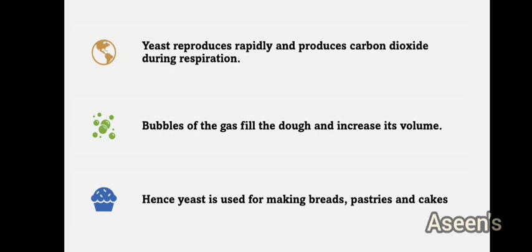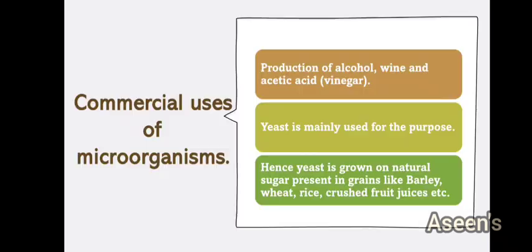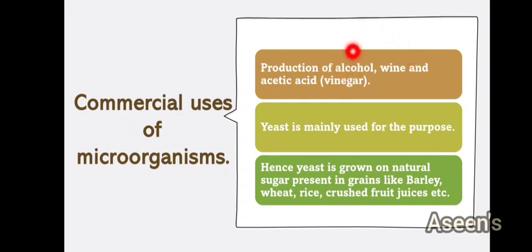Hence yeast is used for making breads, pastries, and cakes. Now let's talk about the commercial uses of microorganisms. Under this we have production of alcohol, wine, and acetic acid. Alcohol and wine are similar — wine uses a particular kind of grape juice, while alcohol can be prepared using rice bran or other materials. Acetic acid (vinegar) is also prepared using microorganisms, mainly yeast, through fermentation.